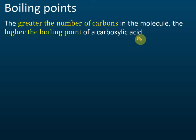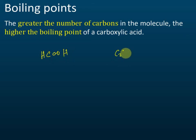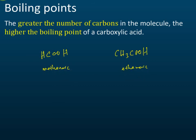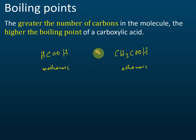For example, methanoic acid (HCOOH) and ethanoic acid (CH3COOH). Which one has a higher boiling point? Ethanoic acid, because it has more carbons.